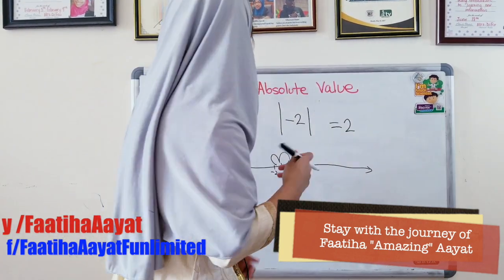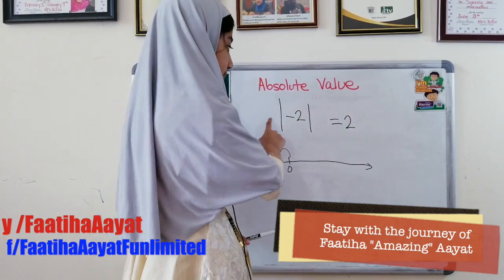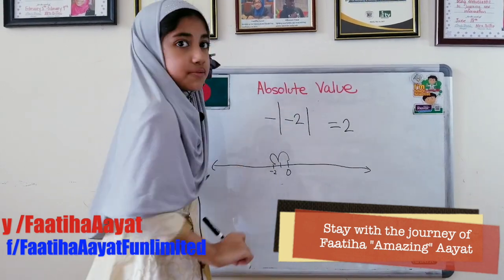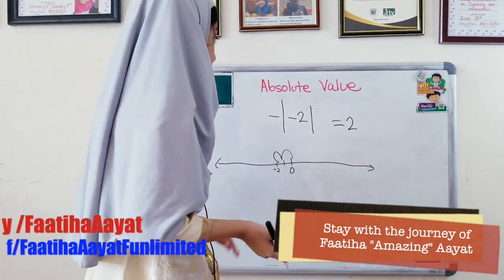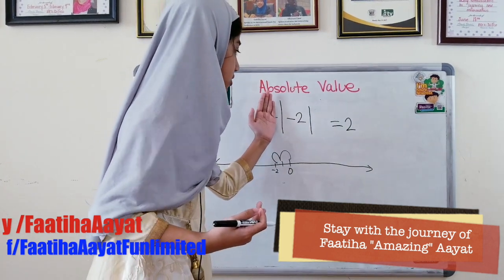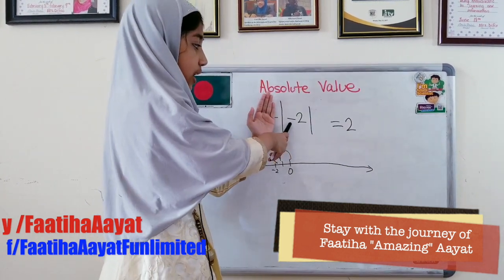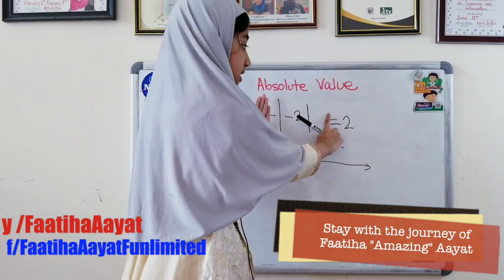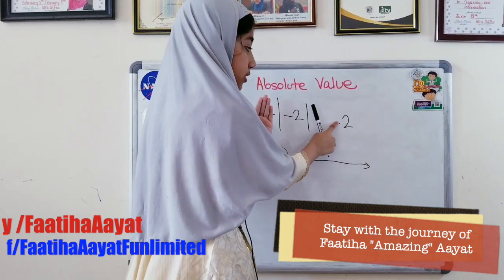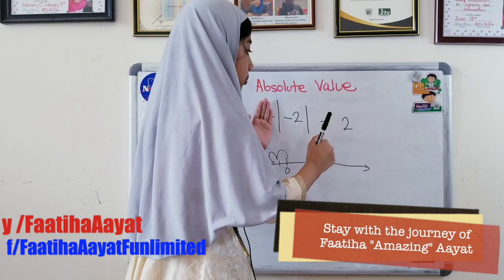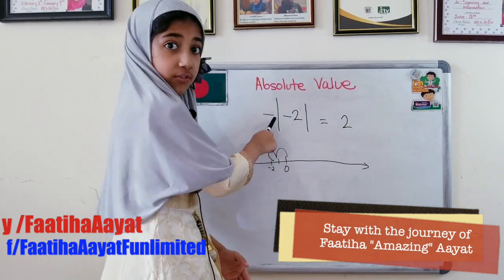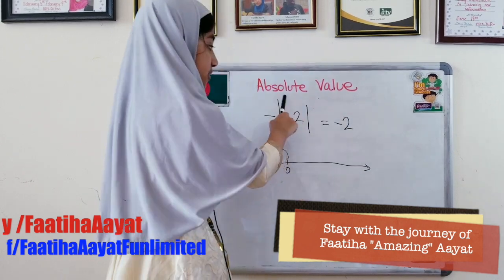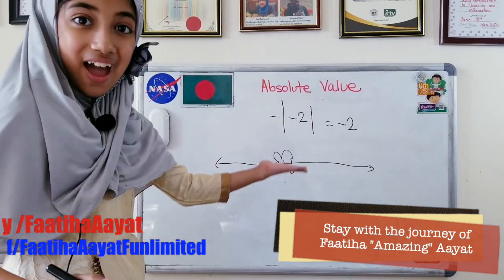Now, what if we have a minus in front of this absolute bar? What will we do then? We will think without that minus first. As I just showed you that the absolute value of minus 2 is 2, right? And what we will do is put this minus in front of the result that we got of the absolute value of minus 2. That easy.